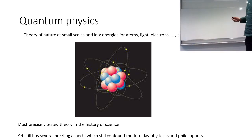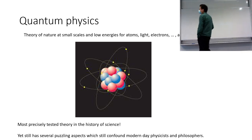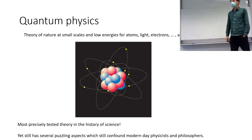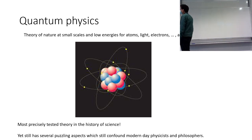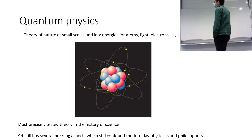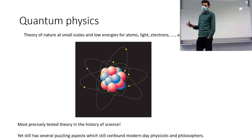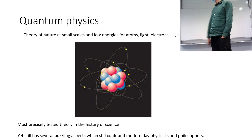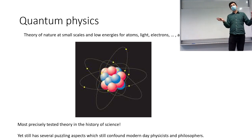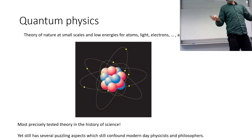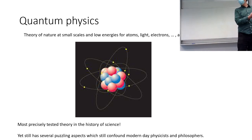Quantum physics — you might have heard a lot about it, but what is it? One way to think of what it actually is: it's essentially a physical theory of nature at small scale, generally. So this could mean things like atoms, or light — light is made of photons — electrons, basically anything small. One of the frontier directions people are really pushing these days is to see how big you can make things before quantum mechanics just sort of breaks down.